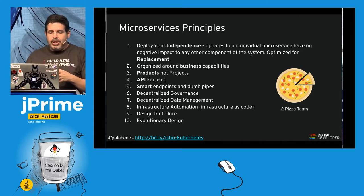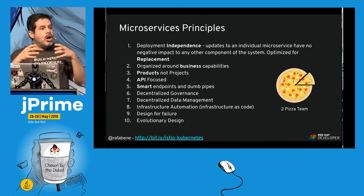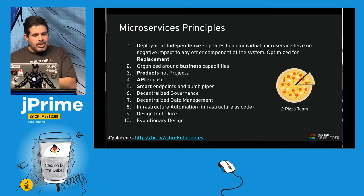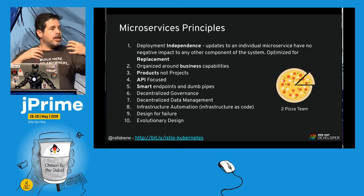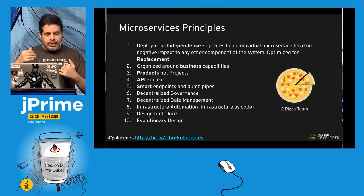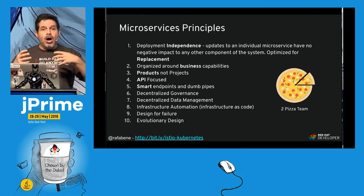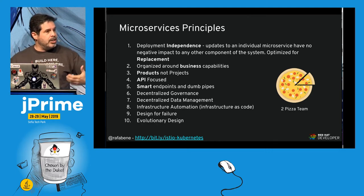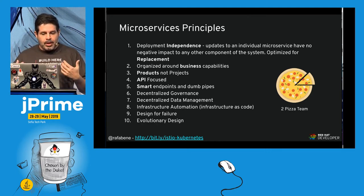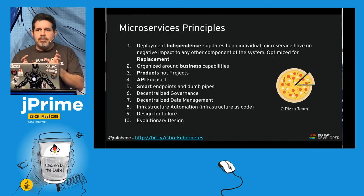We're talking about products, not projects — products that have customers. Everything is focused on the API because services need to communicate. APIs can change, which is why we need evolutionary design. The other service might not be available, which is why we need to design for failure. That's a quick recap of microservice principles.